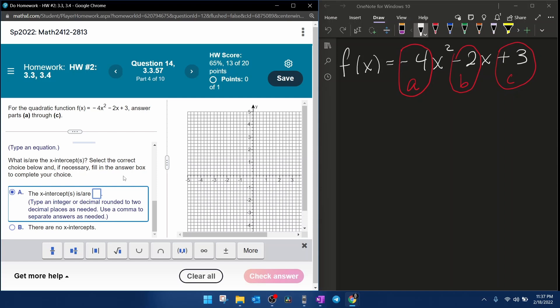Next part, they want the x-intercepts. So since I already have a, b, and c labeled, we're going to plug into the quadratic formula. That is negative b. b is already negative, so that makes that positive. Plus or minus the square root of b squared. Negative 2 squared is 4, minus 4 times a, times c, all over 2a.